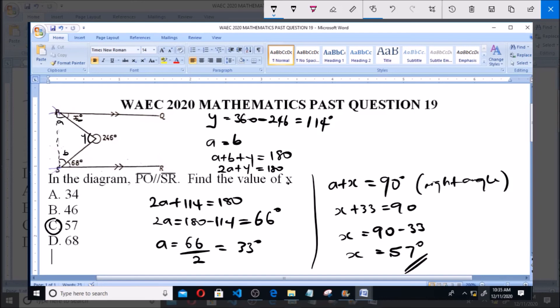So the value of x is equals to 57 degrees, and that is option C. Thank you, and please subscribe to the channel for more videos and past questions.